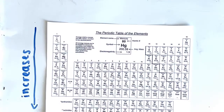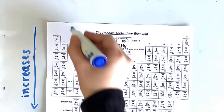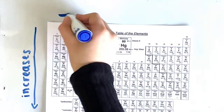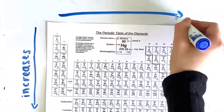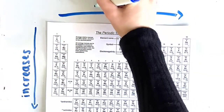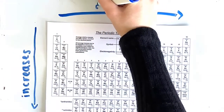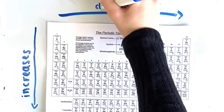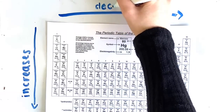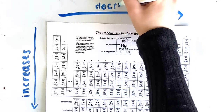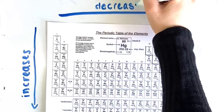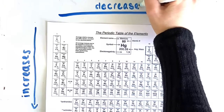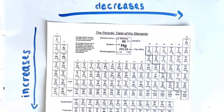As you go across a period, the ionic radius decreases. This is because the number of protons increases. When the number of protons increases, it increases the ENC. The higher the ENC, the more pull the valence electrons feel from the nucleus, giving it a smaller radius.